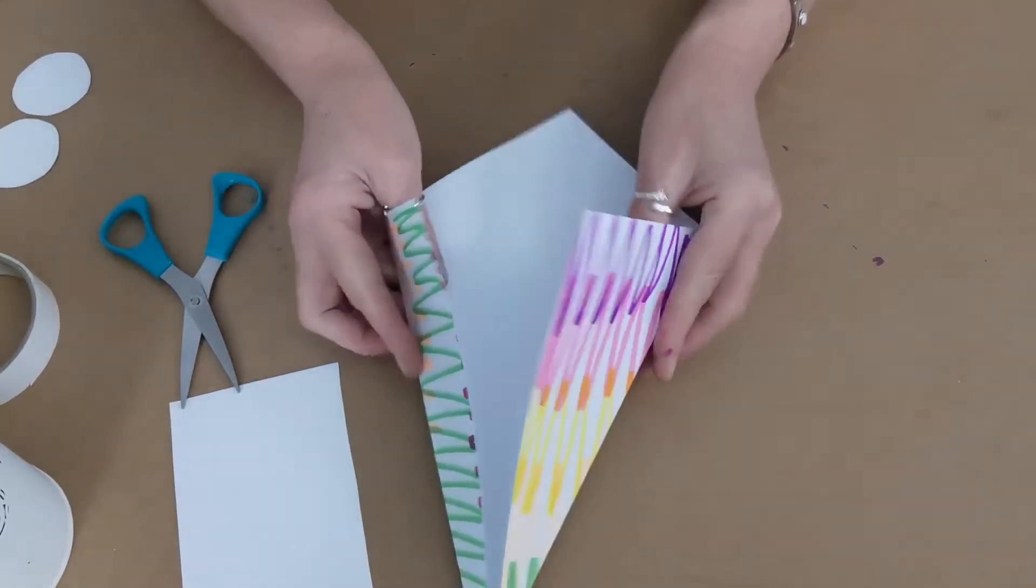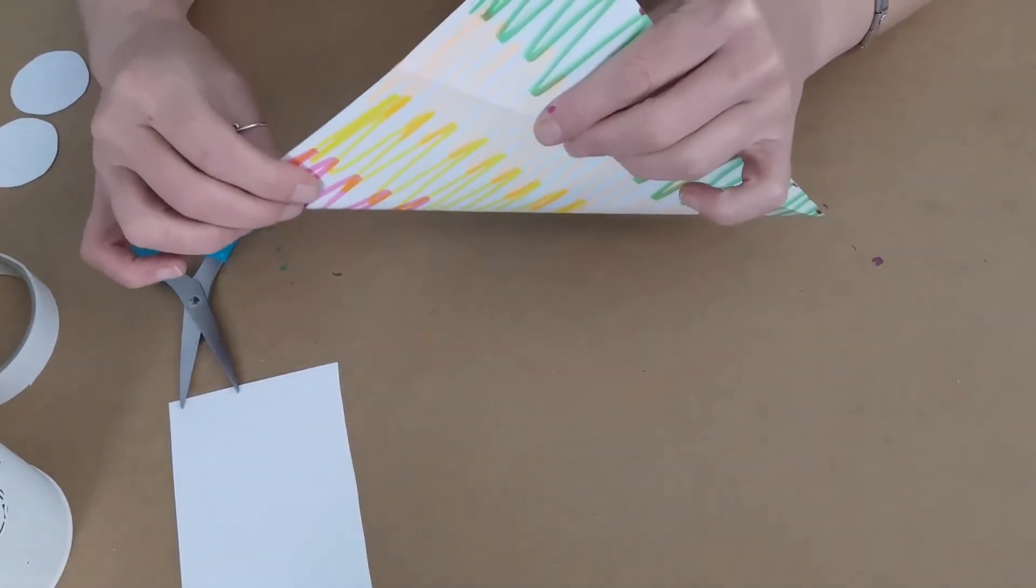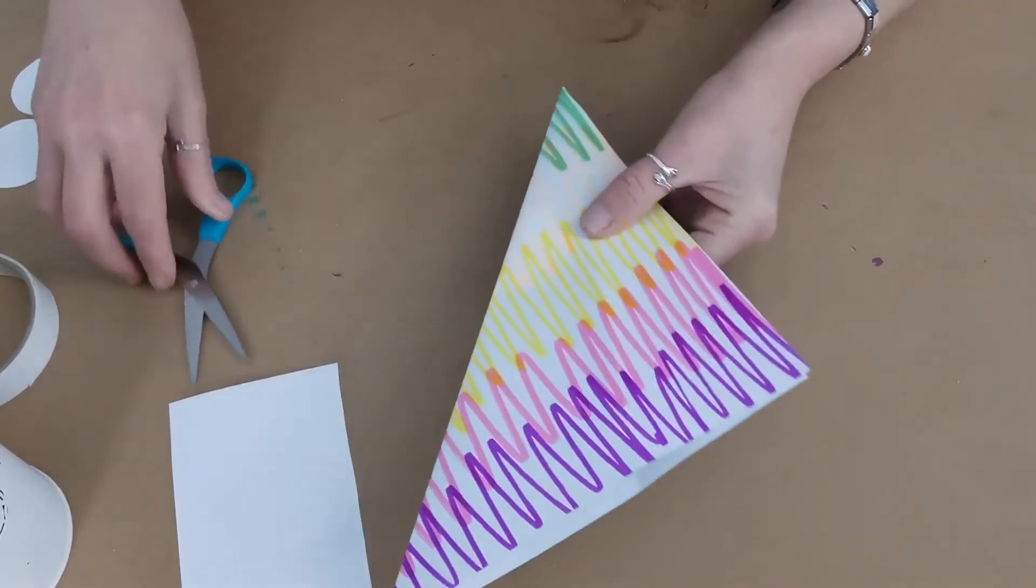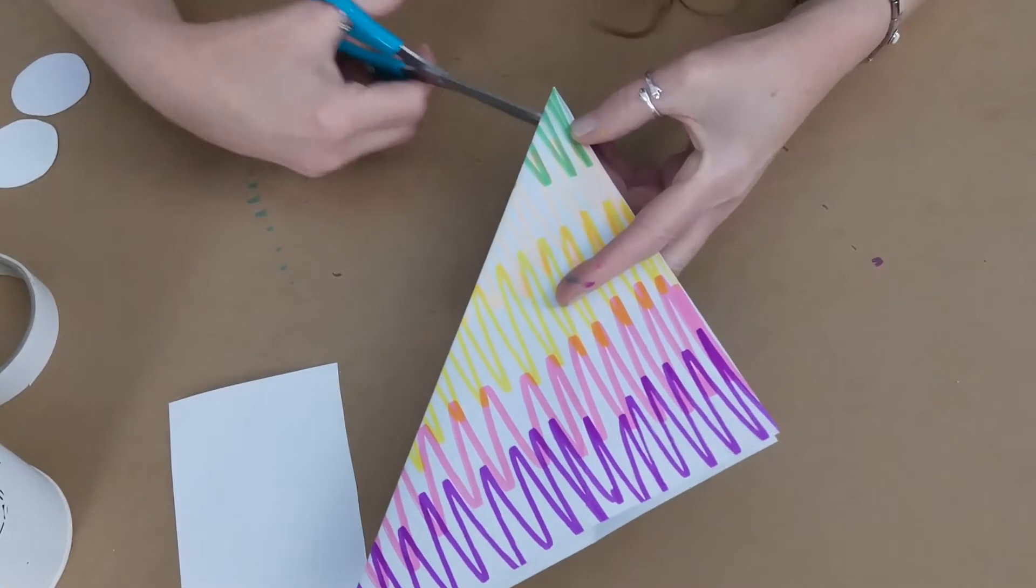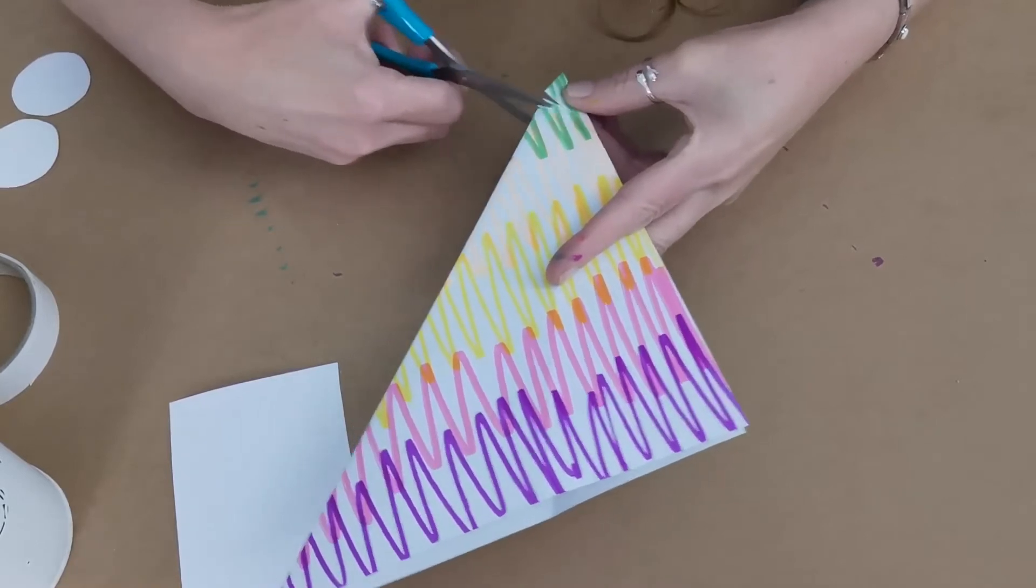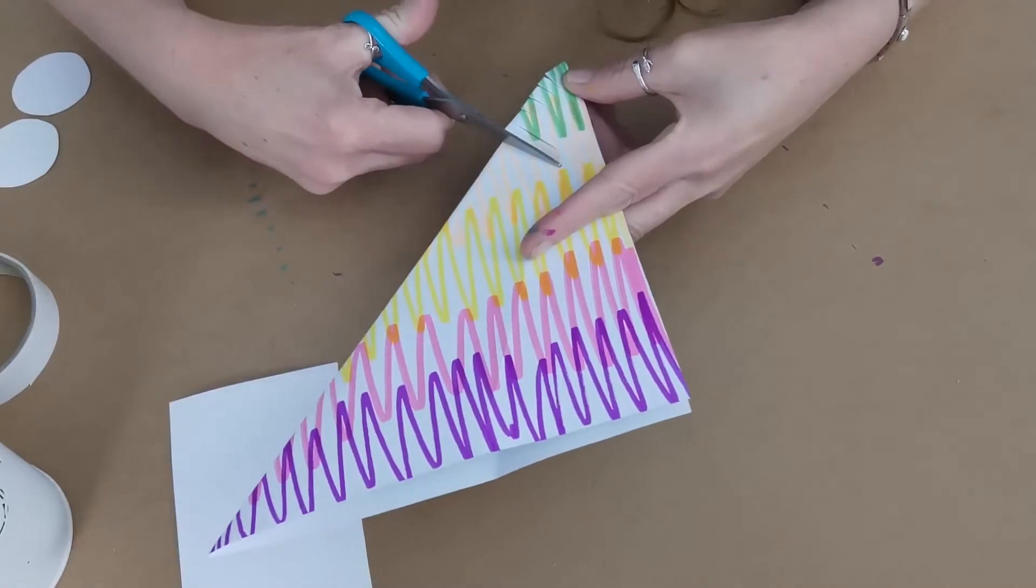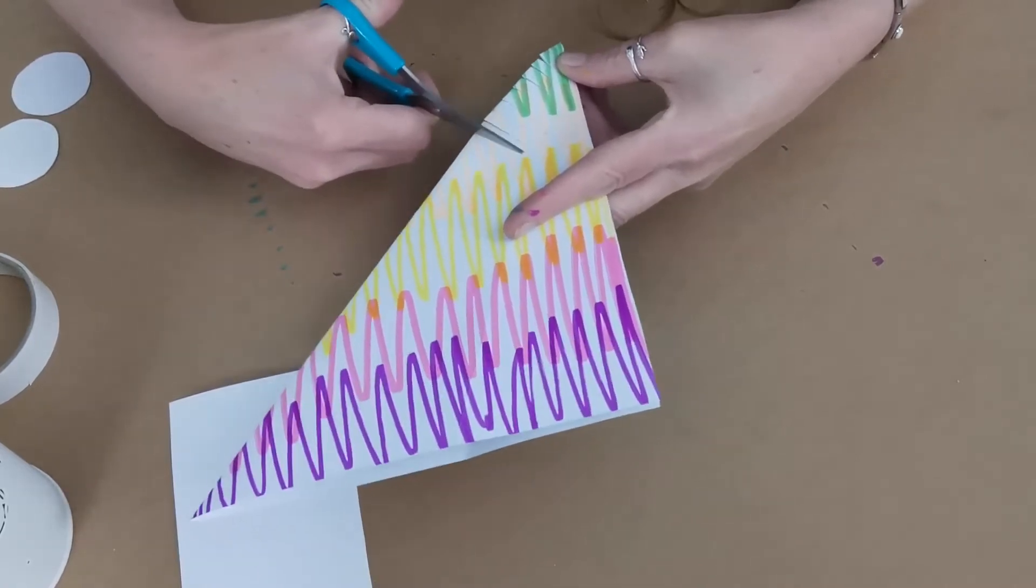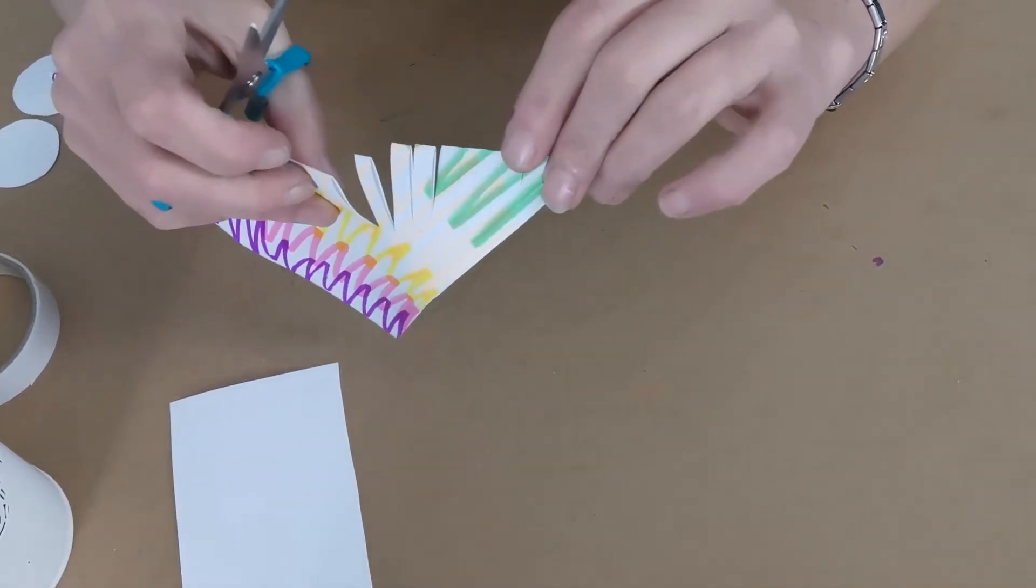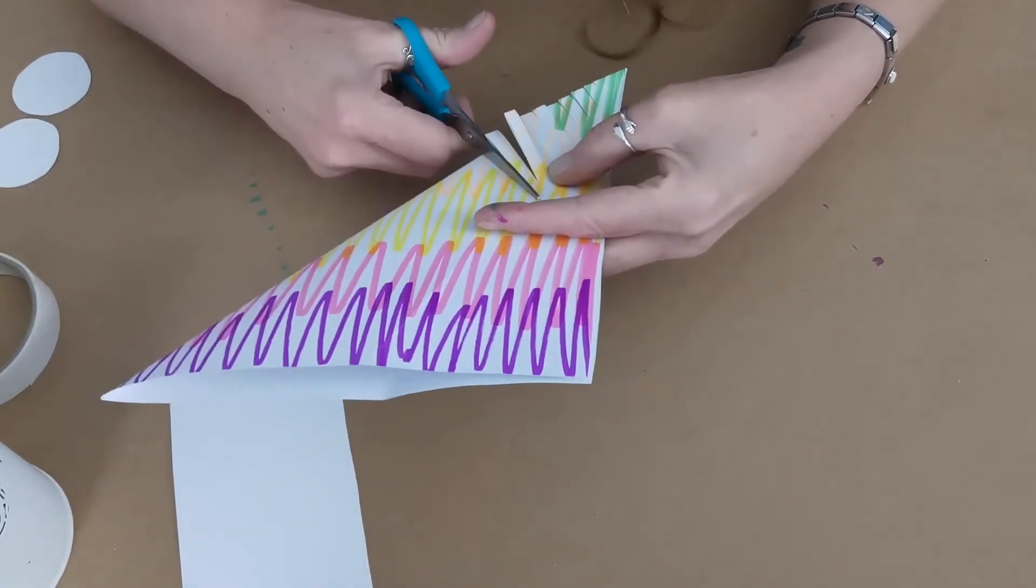So the next stage is to open that up and fold it in half and we have it like this. This end up here is actually the head and this end is the tail. So we need to make some cuts in this now. Starting down here at the tail we're going to make the cuts just come up to the folded line. So they'll be shorter at this end and then they get longer as they move up the piece of paper. We're looking to make our cuts right about this width here. If we make them too wide the fish doesn't bend very well. So I'm going to continue this the whole way up.